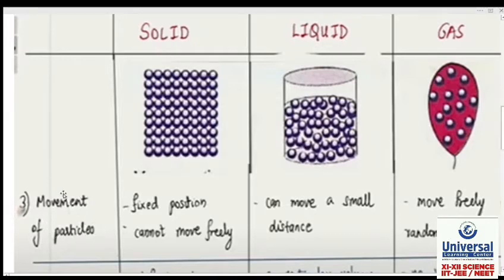Yeh diagram bada acha hai for understanding. I'm keeping this diagram in front and we'll study with respect to it. Next thing we understand is point number 3: the movement of particles. In solids, particles are in fixed position and cannot move freely.